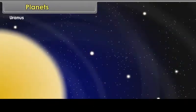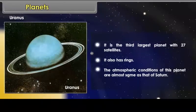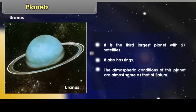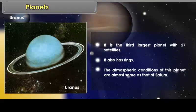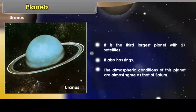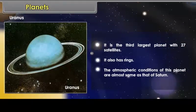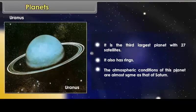It is colder than Jupiter. Uranus. It also has rings. The atmospheric conditions of this planet are almost same as that of Saturn.